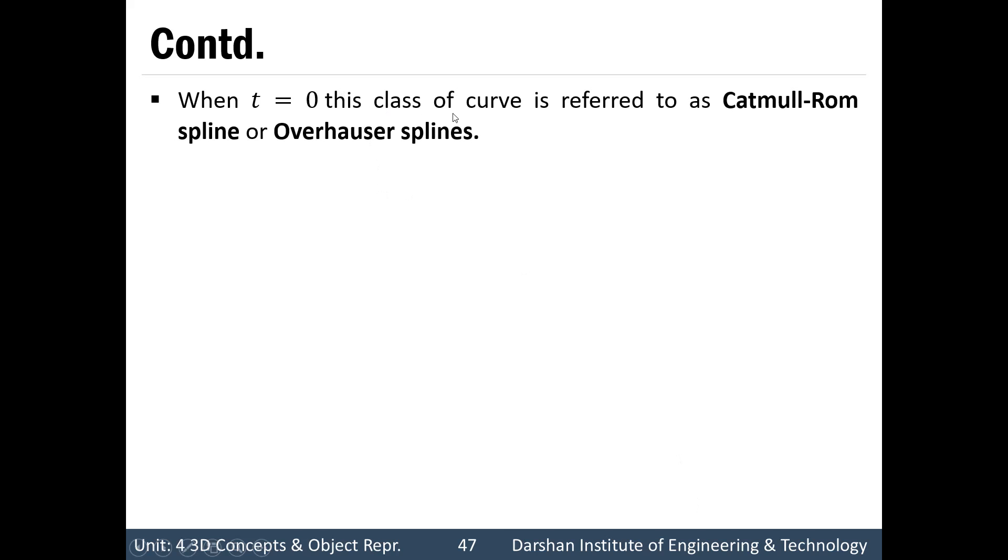Now, where t is equal to 0, then class of curve is referred to as Catmull-Rom spline or Overhauser splines. This is a special case, if t value is equal to 0.